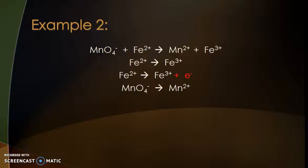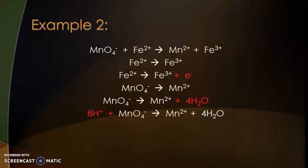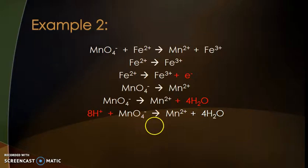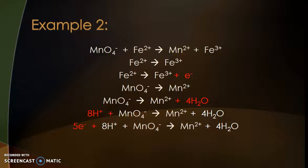The second equation: permanganate on the left and Mn2+ on the right. We start with the major species, the Mn — one on each side, no problem. Oxygens: I have four oxygens on the left, so I add four waters on the right. That gives me eight hydrogens on the right-hand side, so I need eight H+ on the left. Finally, looking at the charges: eight pluses from 8H+ and one minus from permanganate gives seven pluses on the left; two pluses on the right. To get from seven pluses to two pluses, I need to add five electrons.